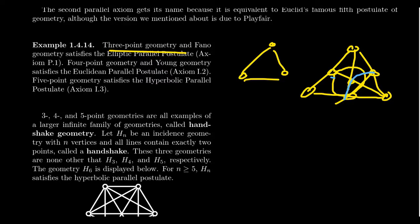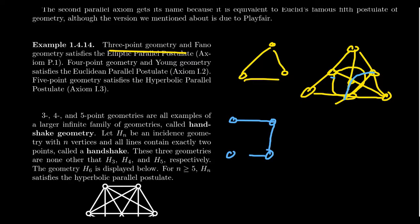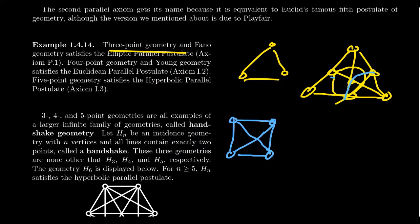For the Euclidean parallel postulate, we've seen some examples. Four-point geometry: if you take a line and a point off the line, there is exactly one parallel to it. Taking any line and any point off that line, there is always exactly one parallel line. Four-point geometry satisfies the Euclidean parallel postulate — it was actually Axiom 2 for four-point geometry.